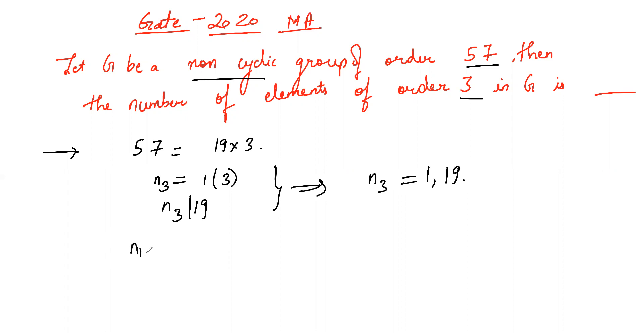Note that n19 is congruent to 1 mod 19 and divides 3, which implies n19 equals 1.